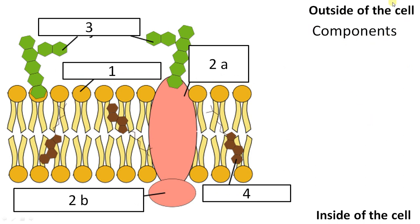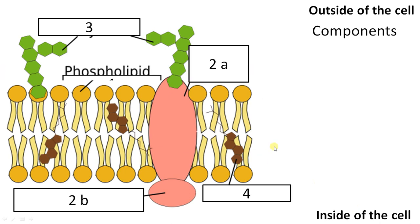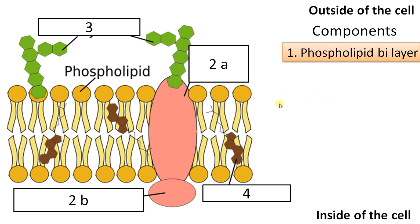So remember, this is the outside of the cell or the extracellular side, and this is the inside of the cell or the cytoplasmic side. This is a phospholipid bilayer — the first component. You can see this is the first layer and this is the second layer, therefore it is called a phospholipid bilayer.